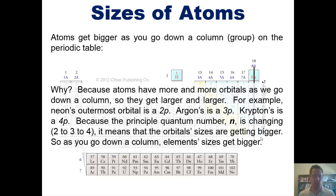4p orbitals are larger than 3p's, which are larger than 2p's, and so forth. So as you go down a column, element sizes get bigger.